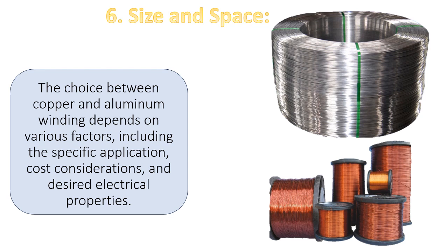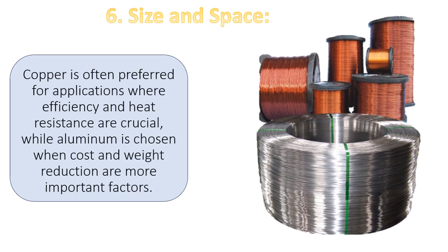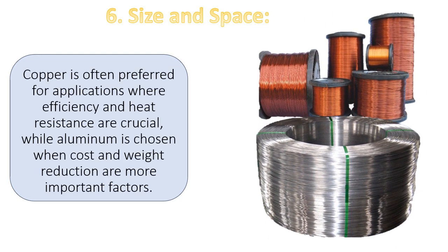The choice between copper and aluminum winding depends on various factors including the specific application, cost considerations, and desired electrical properties. Copper is often preferred for applications where efficiency and heat resistance are crucial, while aluminum is chosen when cost and weight reduction are more important factors.